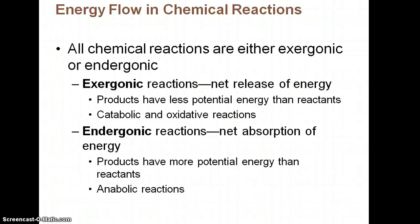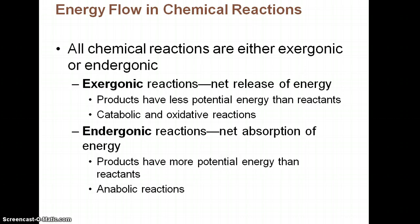Energy flow in chemical reactions: all chemical reactions are either going to be considered exergonic or endergonic. In an exergonic reaction, you're going to have a net release of energy, meaning the products have less potential energy than the reactants. These are your catabolic and oxidative reactions. Endergonic reactions have a net absorption of energy — they require more energy to take place, so the products have more potential energy than the reactants. These are your anabolic reactions.